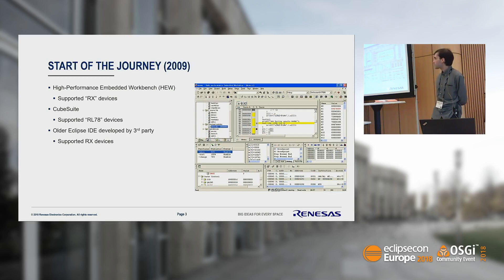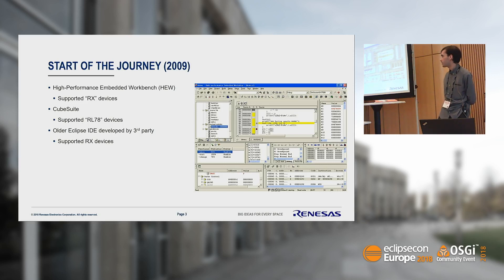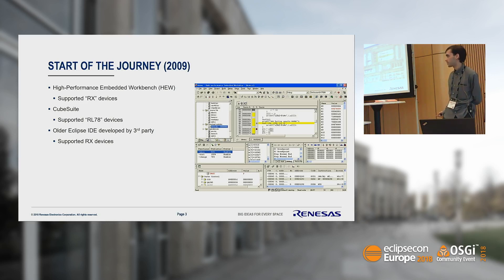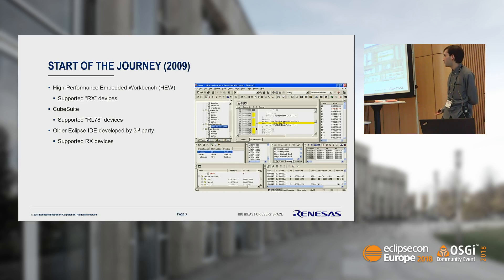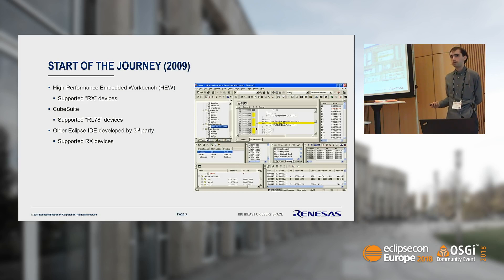Let's go back to 2009, at the start of the journey. At that point, Renesas had two main IDEs: the High-performance Embedded Workbench, which we call HEW, which supported the RX family of devices, and CubeSuite, which supported the R78 family of devices. We also had an Eclipse-based IDE which a third-party developed for us, which again supported just the RX family. So we had three IDEs, each only supporting a limited subset of our portfolio. We already needed a new IDE that supported everything, and we were getting requests from customers for an Eclipse-based IDE.